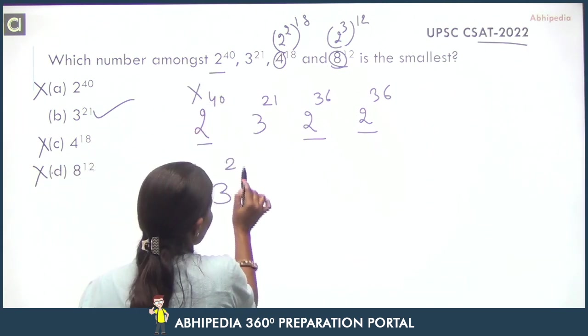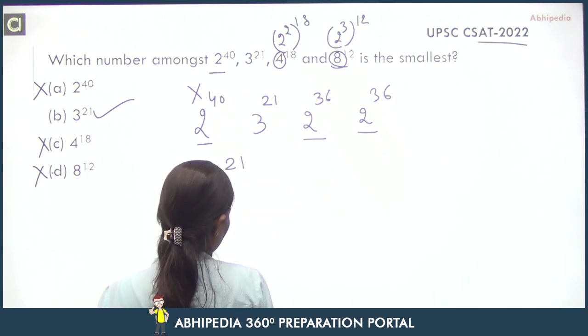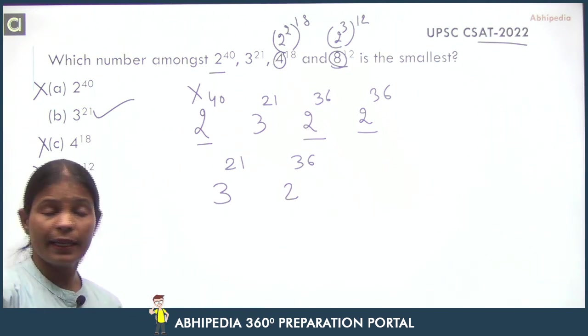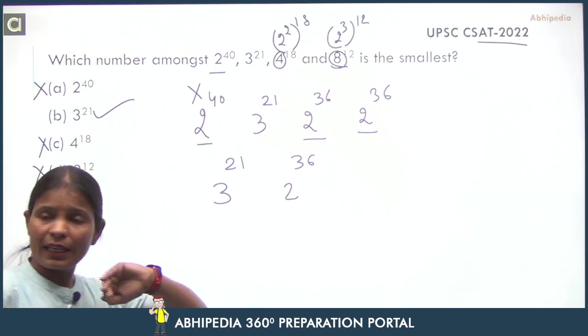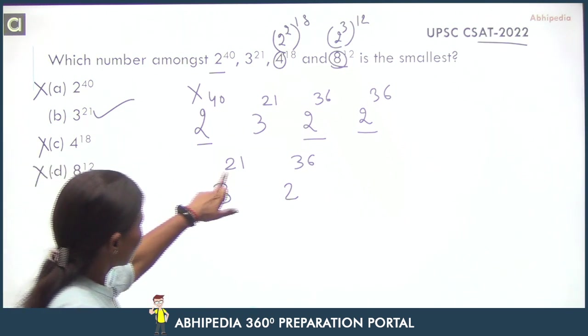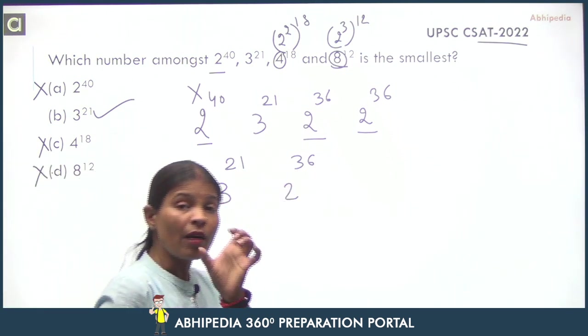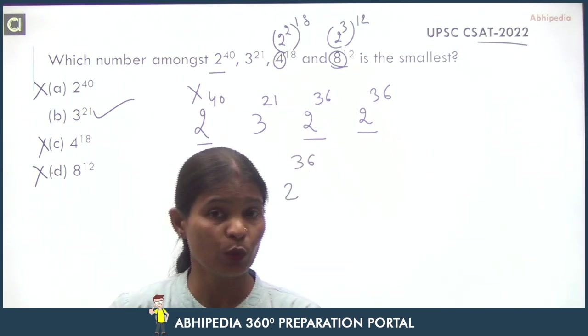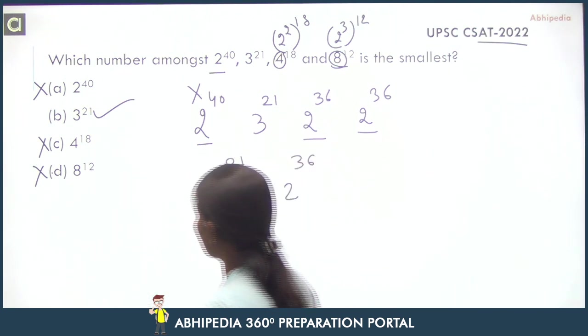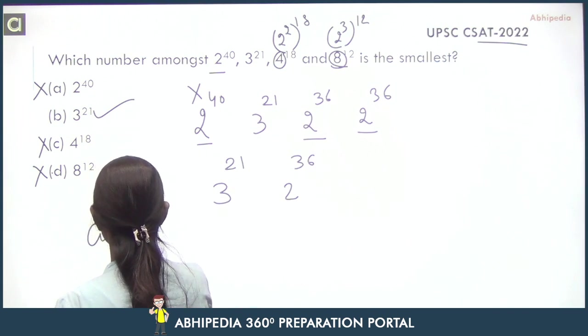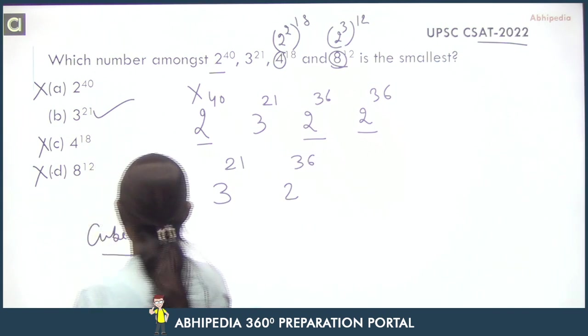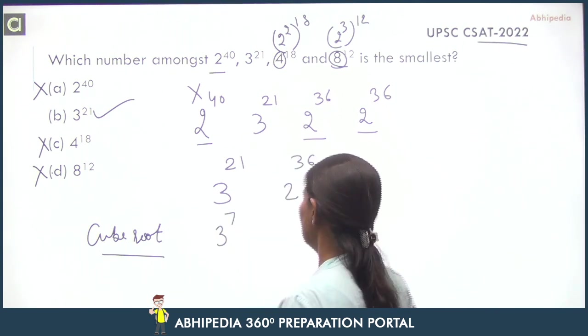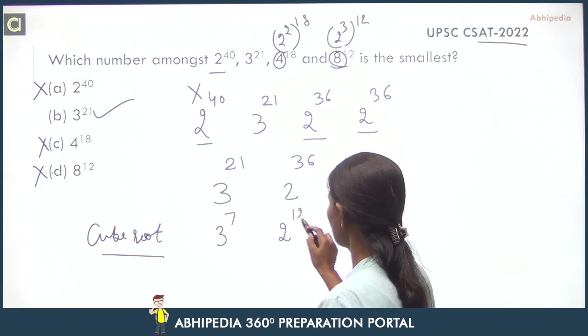3 raised to power 21 and 2 raised to power 36. If you can do the power directly, look, both powers are divisible by 3, so we can take cube root. Then we are taking the cube root. If I take cube root, this will become 3 raised to power 7 and this will become 2 raised to power 12.